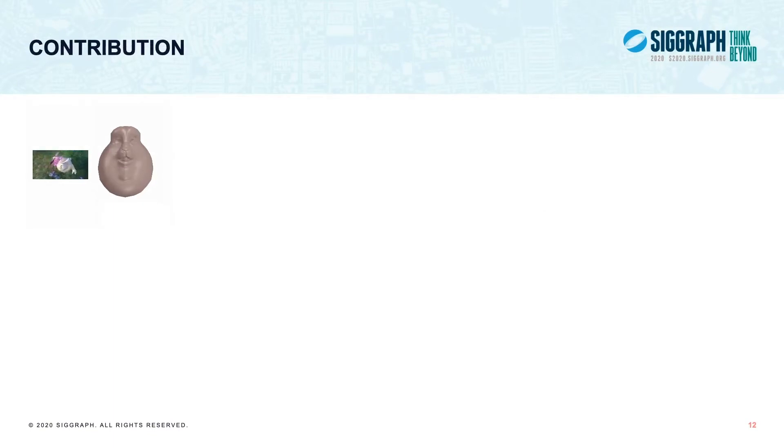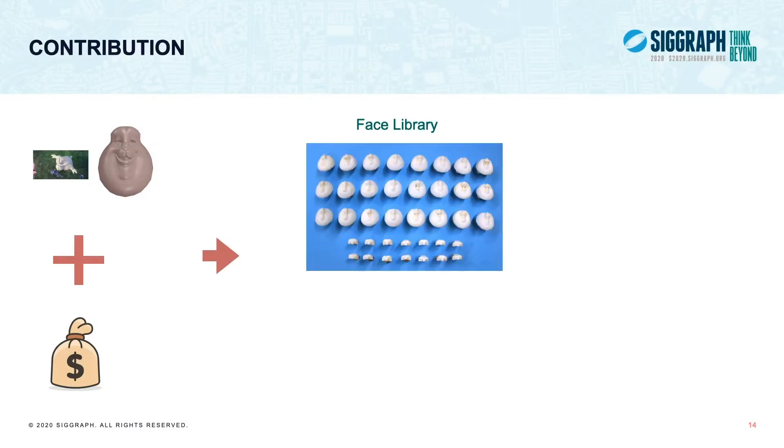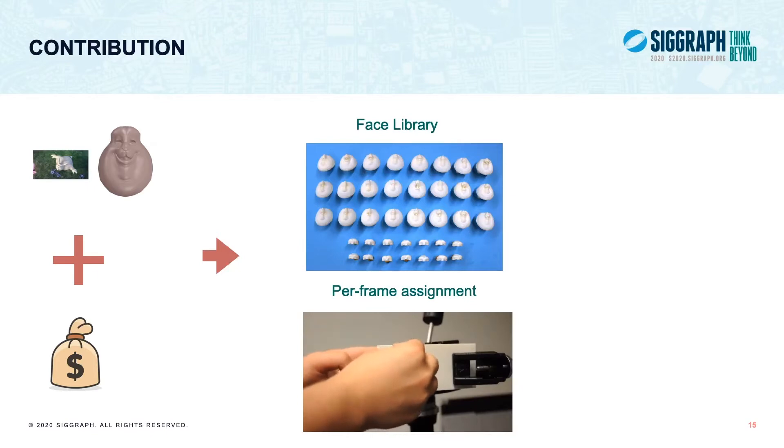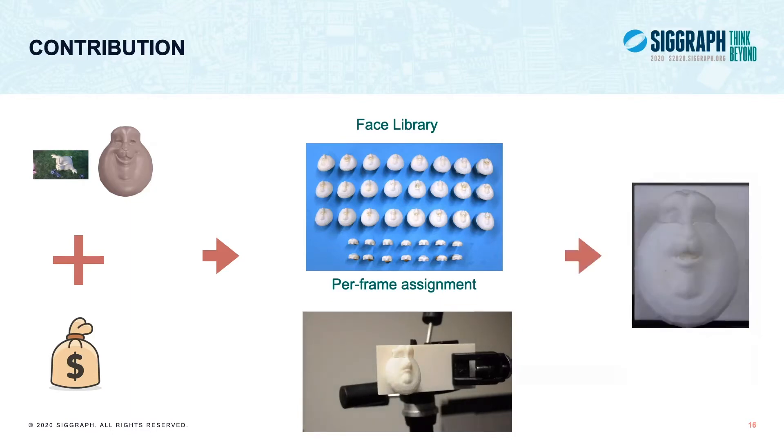In our research, we addressed the following problem. Given a computer-animated sequence of faces, and a printing budget, we output a library of replacement parts, and a per-frame assignment of the parts such that we maximally approximate the input animation while minimizing the amount of 3D printing and assembly. Our goal is to make sure that the resulting stop-motion animation is perceptually as similar as possible to the input computer animation.